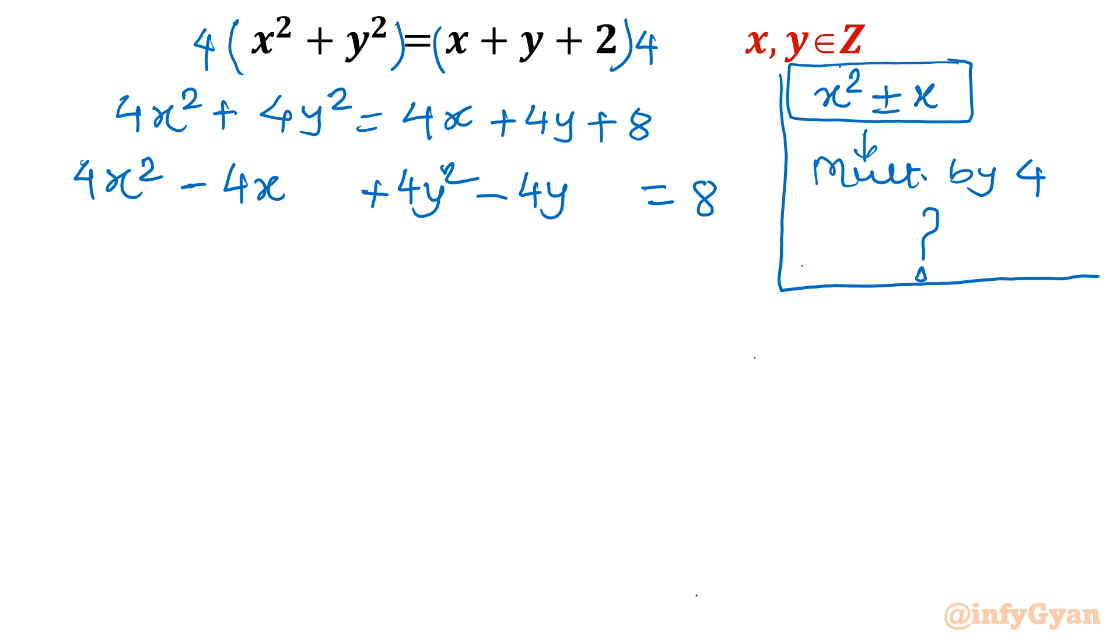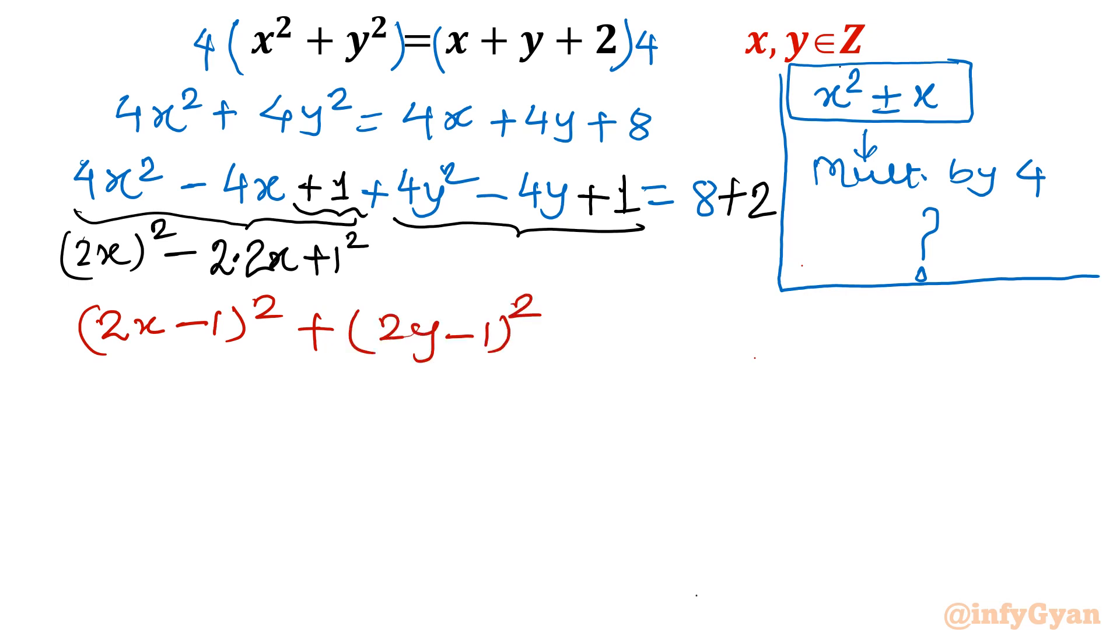Now see, I will write the very first term which is 4x square. I can see this term as 2x whole square minus this term as 4x as 2 times 2x. So what is missing? It is missing only one square. That means I have to add 1 to both the equation variables. So once we have added 2 to LHS, I need to add 2 to RHS also. I can write first as 2x minus 1 whole square and the last three terms as 2y minus 1 whole square equal to 10.